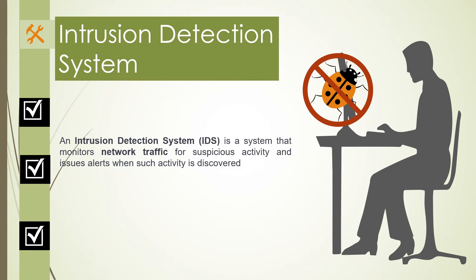Intrusion Detection System: Any unauthorized access, attempt to access, damage, or malicious use of information resources constitutes an intrusion. An IDS is a system that monitors network traffic for suspicious activity and issues alerts when such activity is discovered. It is a software application that scans a network or system for harmful activity or policy breaching. Any malicious venture or violation is normally reported to an administrator or collected centrally using a Security Information and Event Management (SIEM) system.